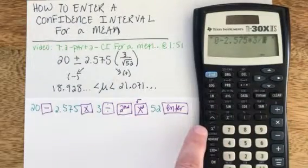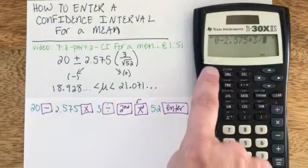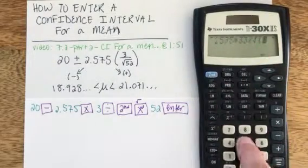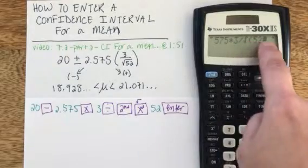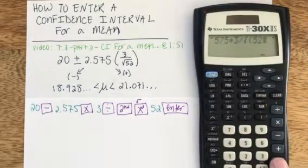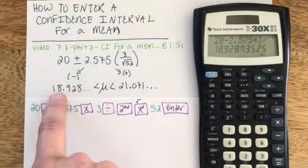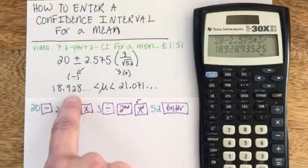Don't forget that since the square root is actually listed above the x squared, I need to hit 2nd and x squared to get the square root, and now I can enter the 52. We do not need to close off that parenthesis. We can just go ahead and hit enter, and we get the lower end of our confidence interval to be 18.92.